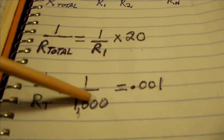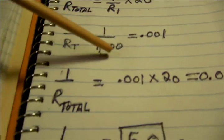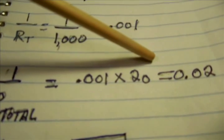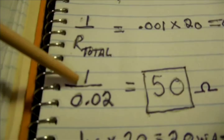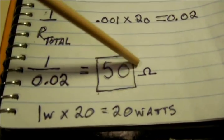R1 is 1000 ohms. 1 divided by 1000 is .001. There's 20, multiply that by 20, comes out to .02. And 1 divided by .02 equals 50. 50 ohms total.